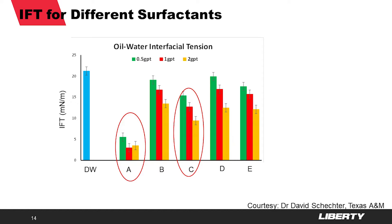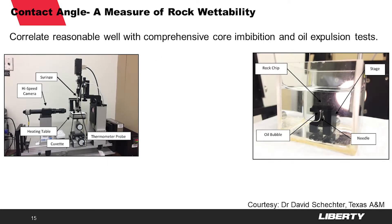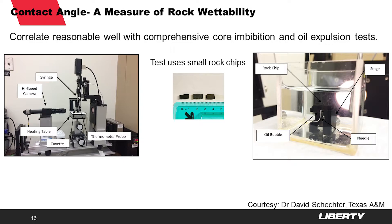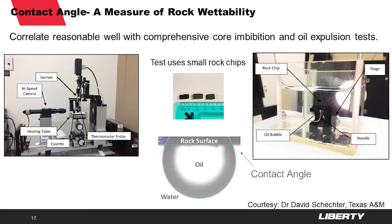Surfactant C is a lower cost option compared to surfactant A. But more importantly for this enhanced oil recovery mechanism, the contact angle is a good measure of rock wettability, and we have found that it correlates reasonably well with more comprehensive core inhibition and oil expulsion tests. The test setup is similar to the interfacial tension, but in this case we use a small rock chip of maybe a centimeter in length by about 0.2 centimeters. That chip is saturated in oil, then we place an oil bubble on that rock chip also embedded in the water and surfactant, and we can determine a contact angle to determine the wettability of the rock.